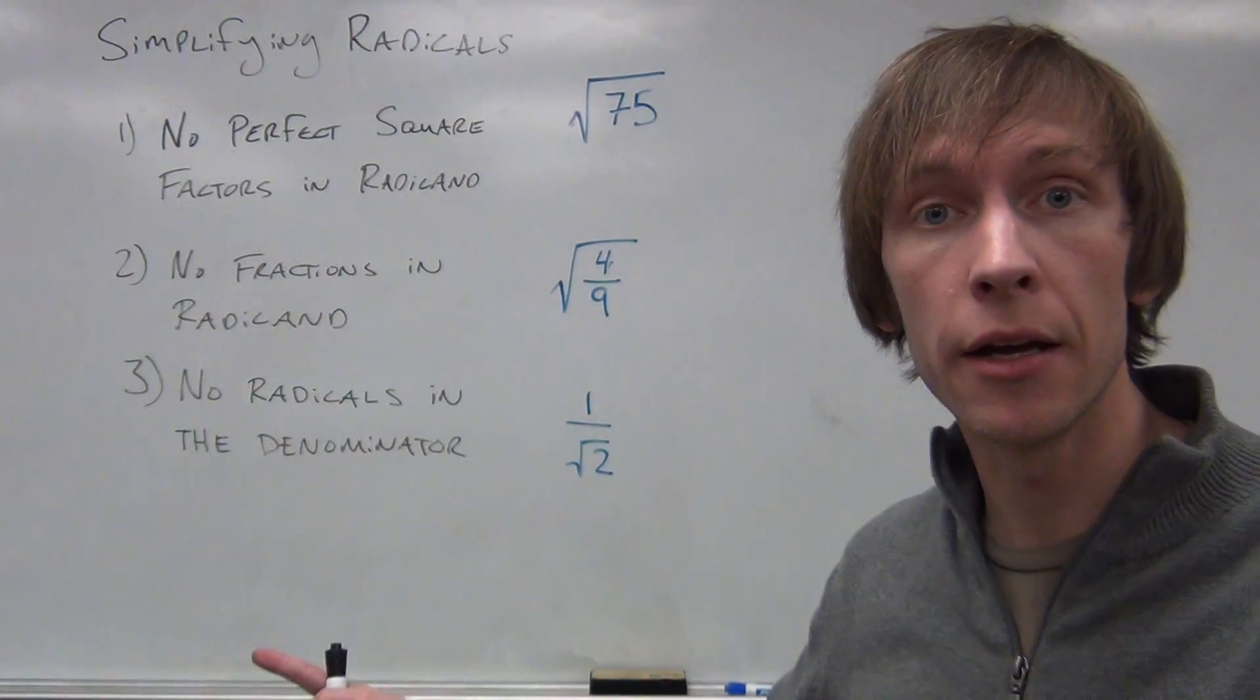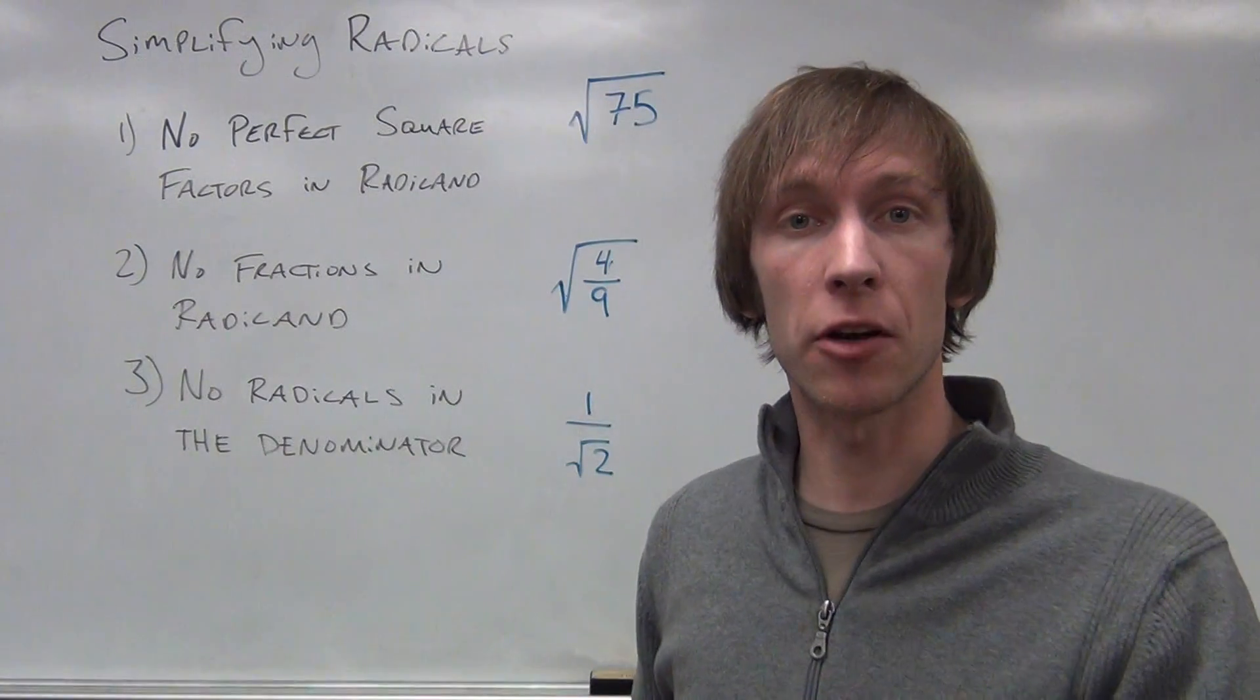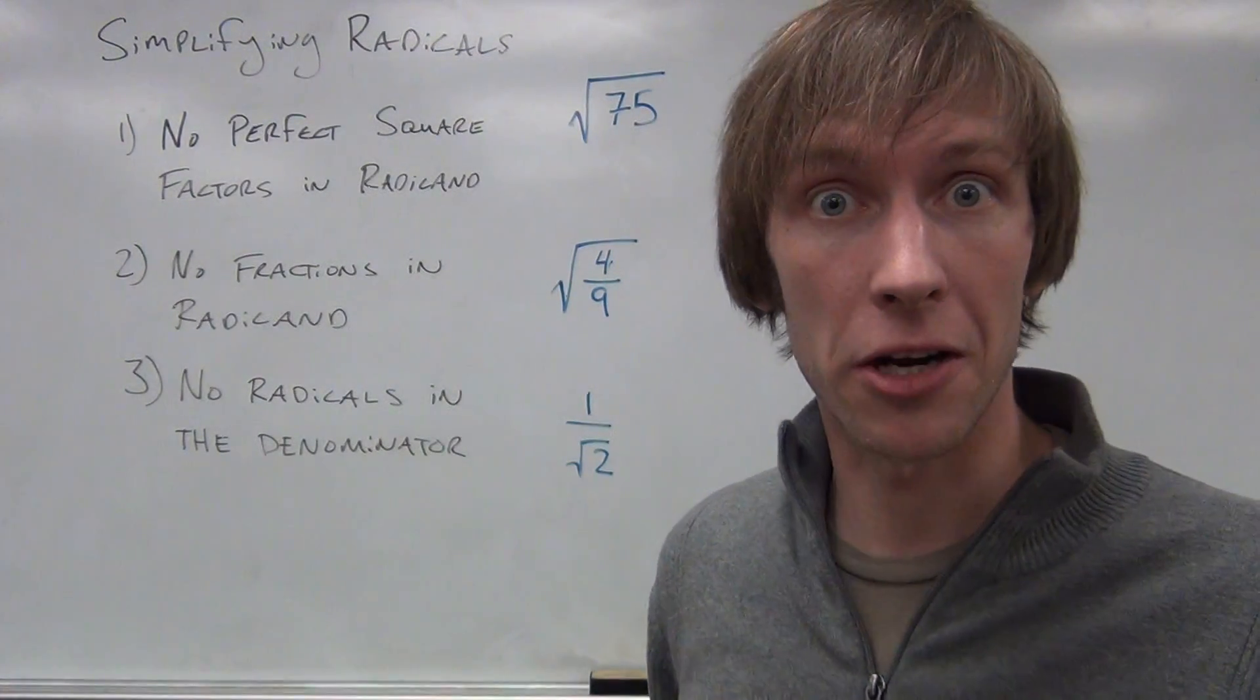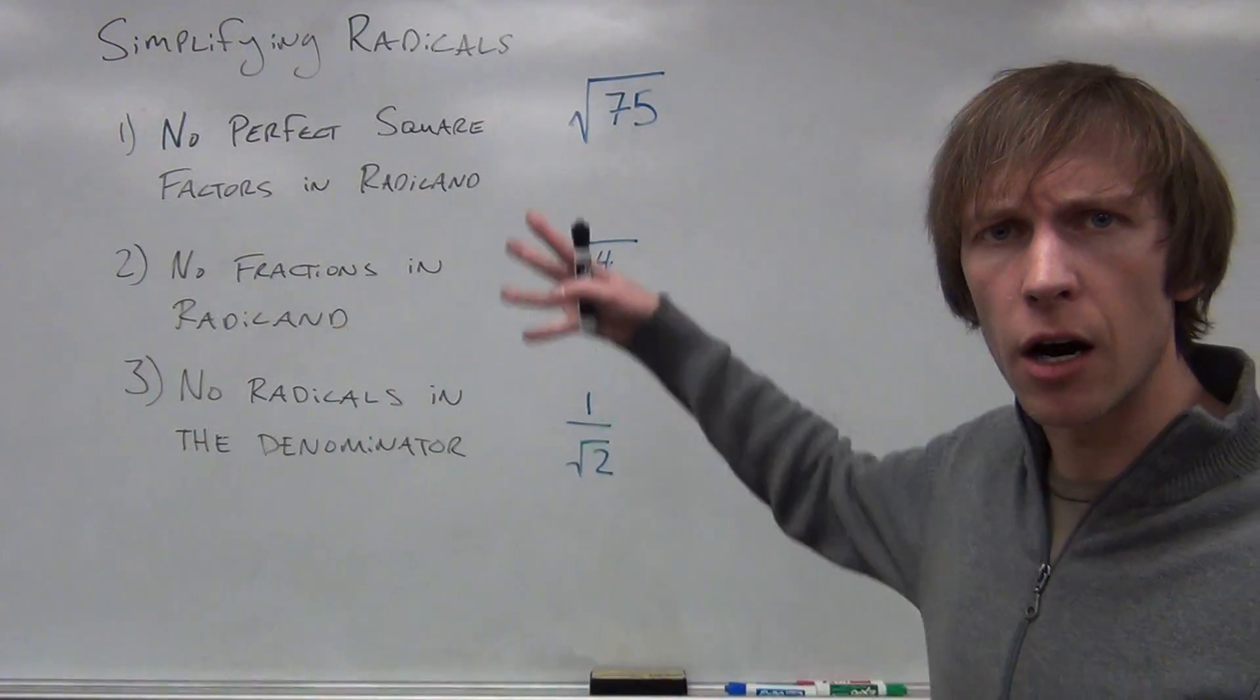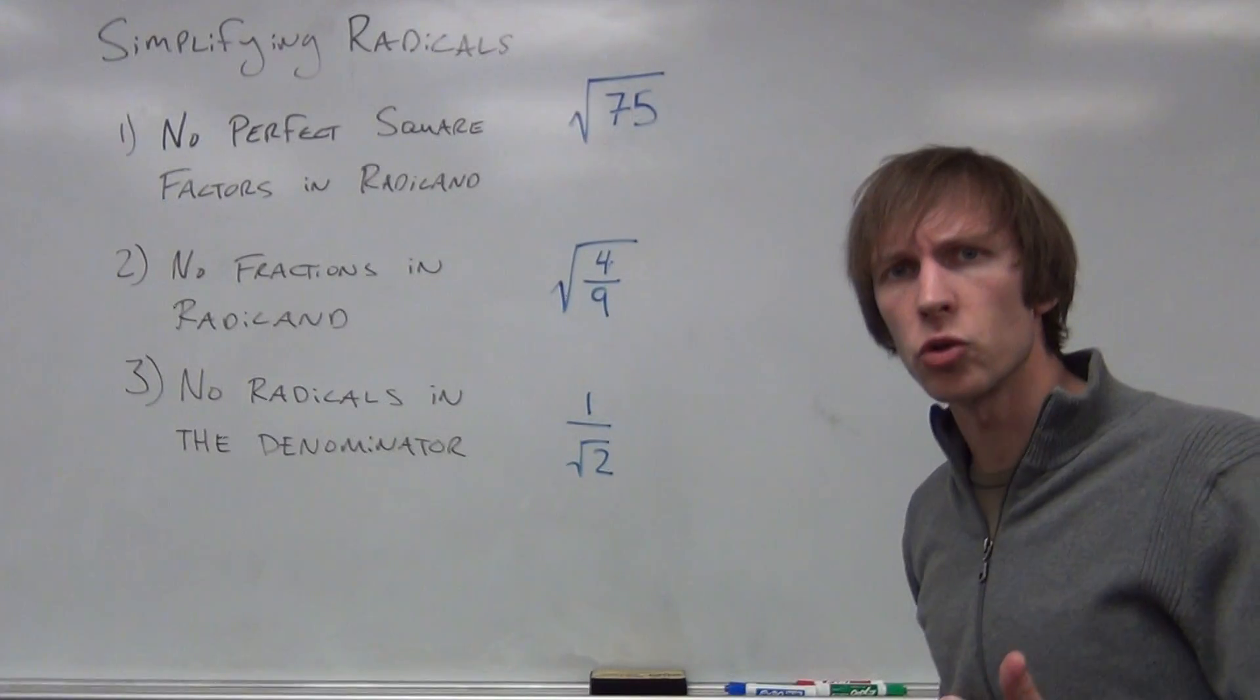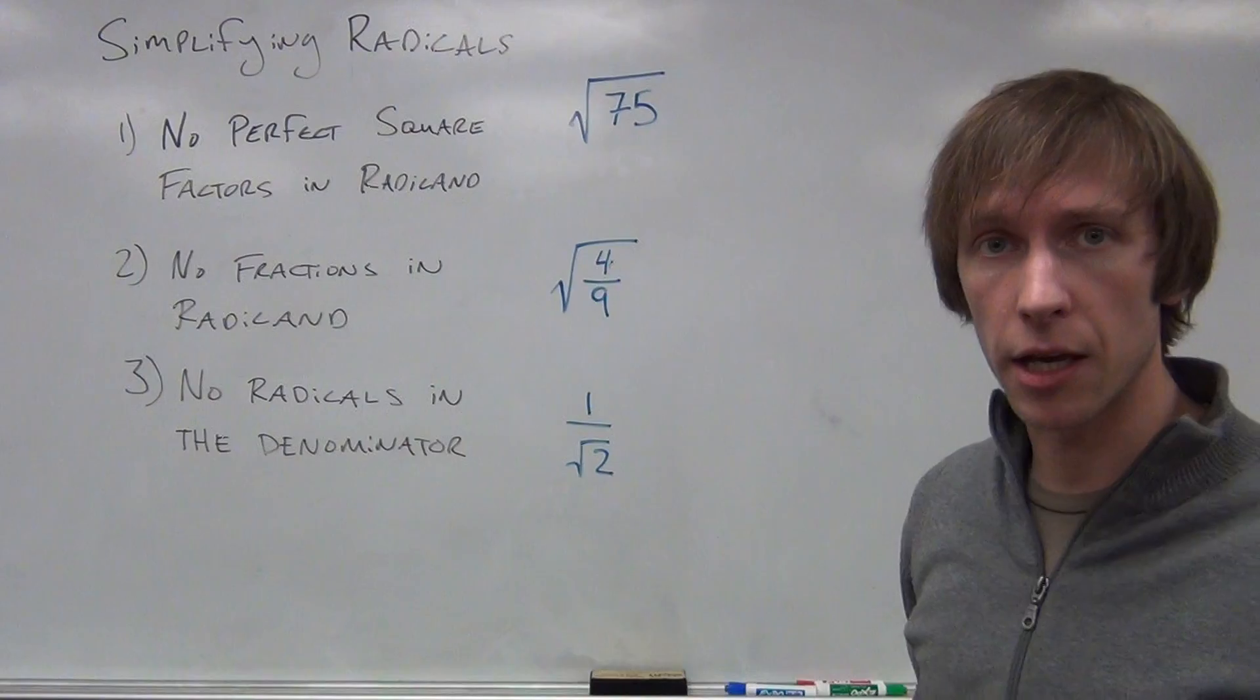And so these rules will apply when you get to future sections where you're having to simplify radical expressions, algebraic radical expressions. So here the rules for simplifying radicals are these three right here. The first rule is that there can be no perfect square factors in the radicand.